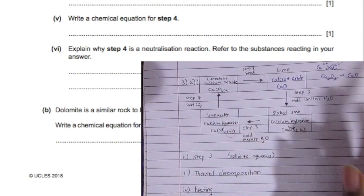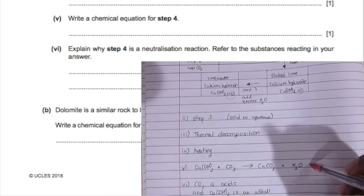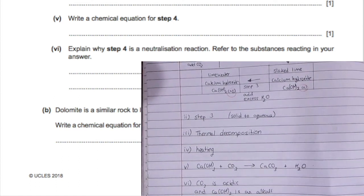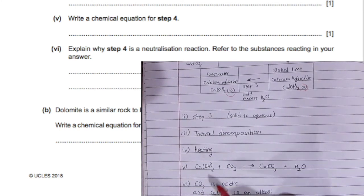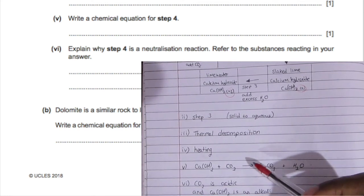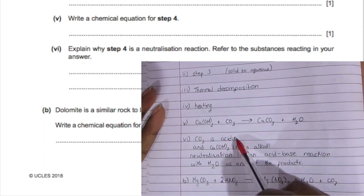Explain why step four is a neutralization reaction. It's a neutralization reaction because carbon dioxide is acidic and calcium hydroxide is an alkali or is basic. Neutralization is an acid-base reaction, and usually water is one of these products. As you can see, water is present.